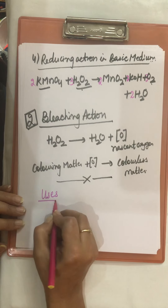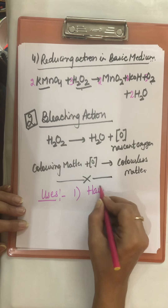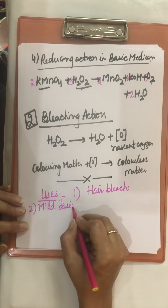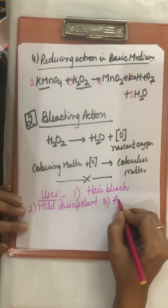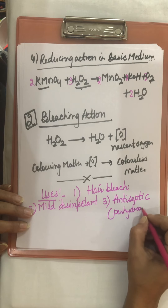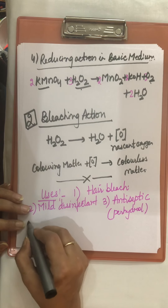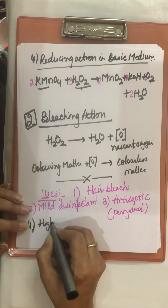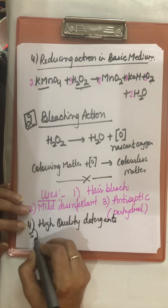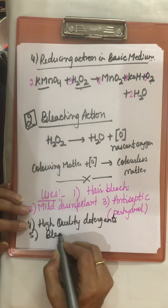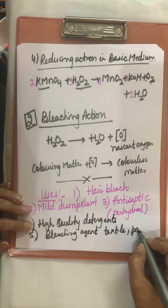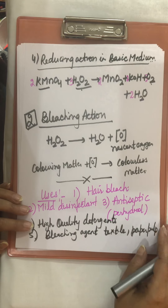Uses of H₂O₂: it is used as a hair bleach, as a mild disinfectant, and as an antiseptic. In the market it is sold under the name perhydrol. It is used to make high-quality detergents. It is also used as a bleaching agent for textiles, paper pulp, leather, oils, and fats.